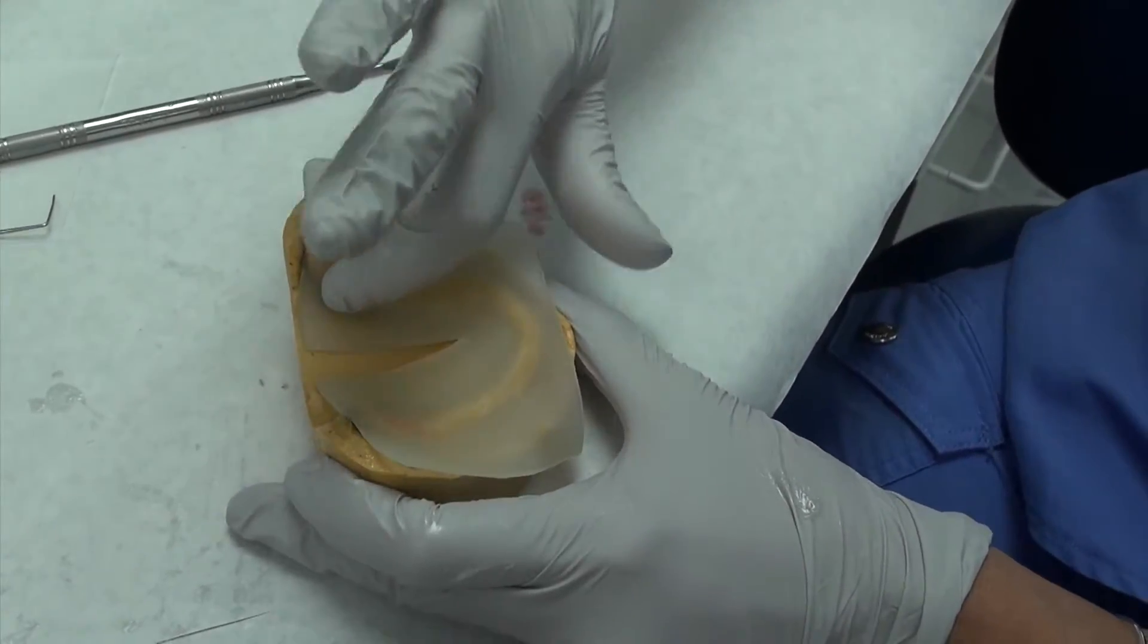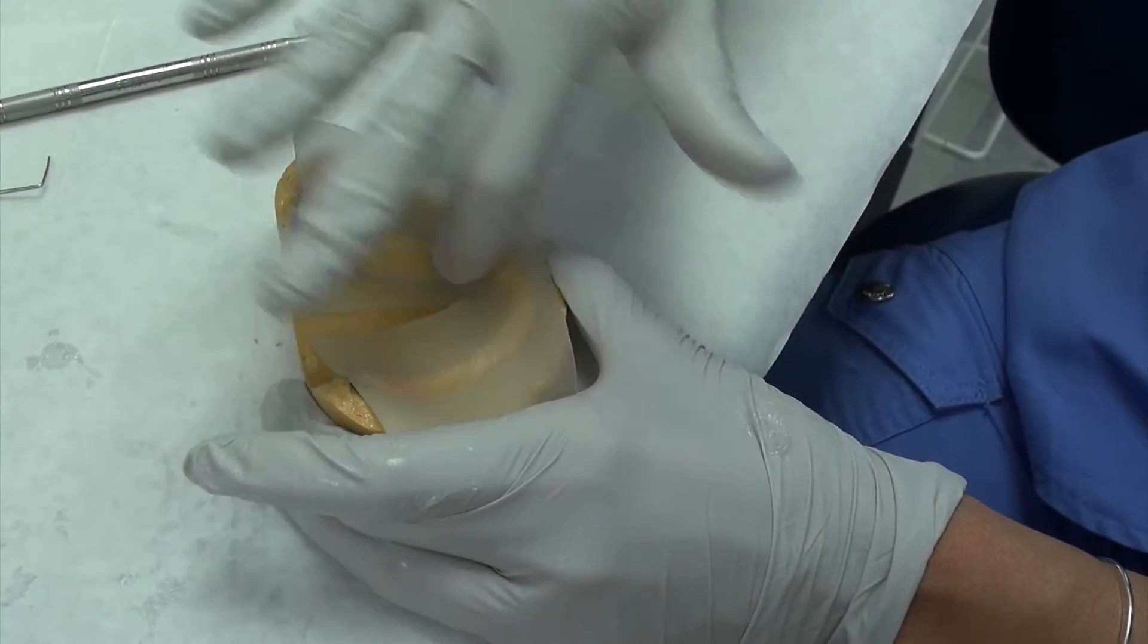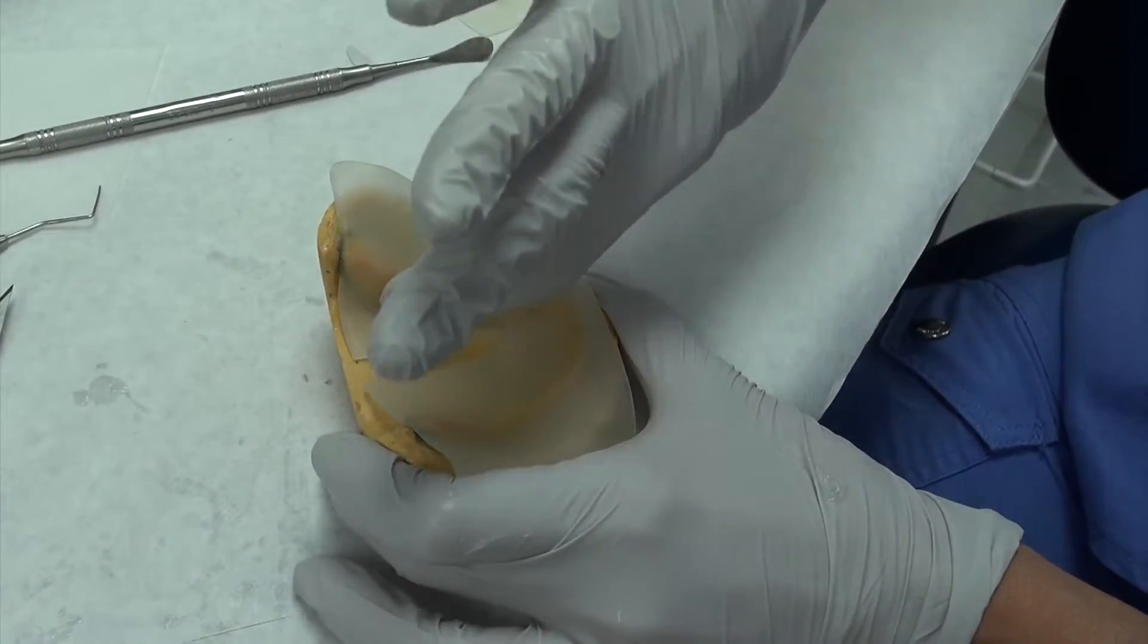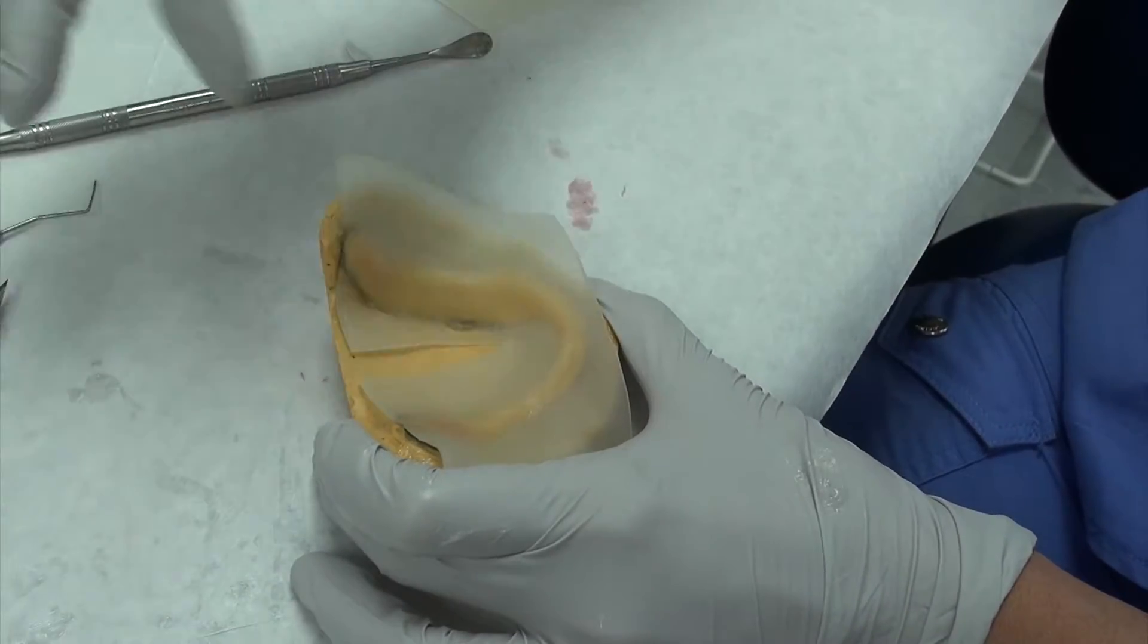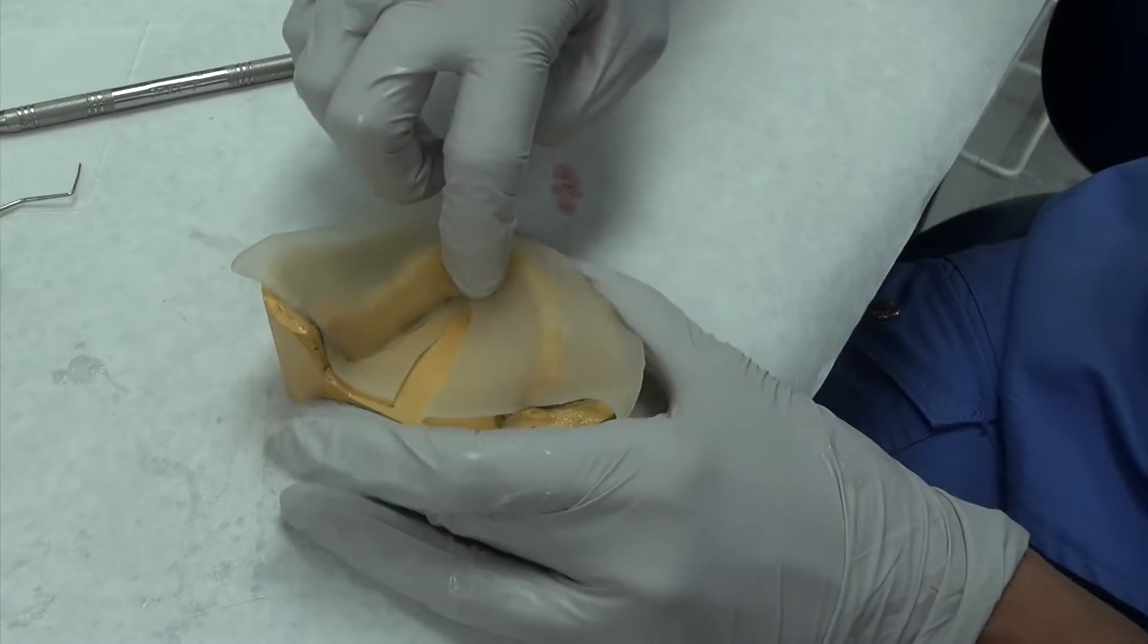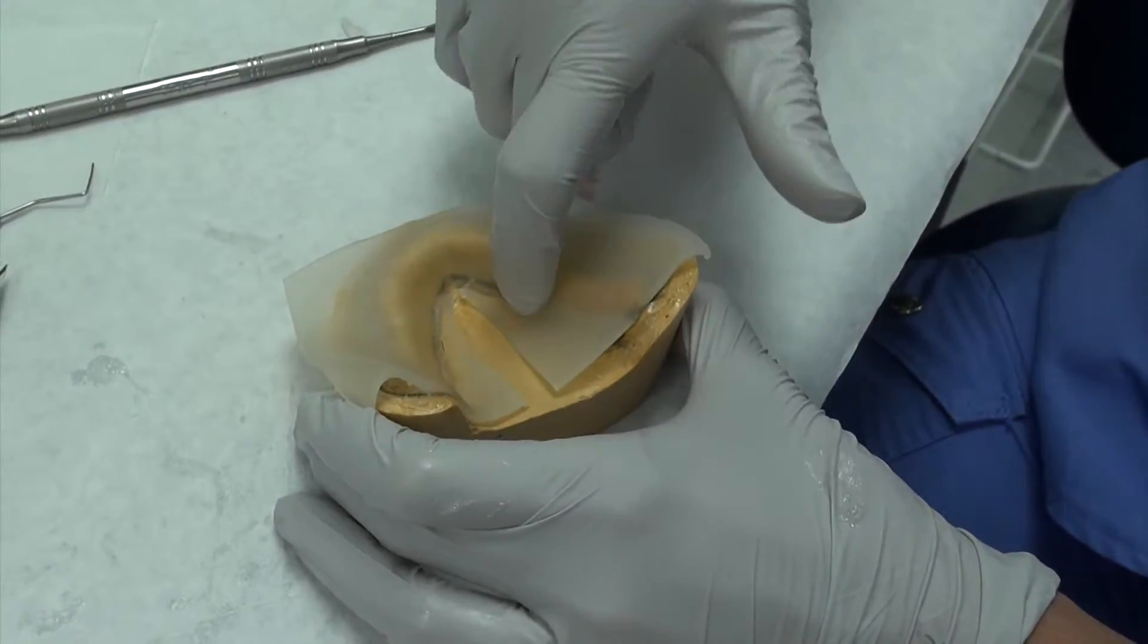All the way to the retromolar pad. Now once you do that, you can in either direction that you prefer, downward motion. And you see how I'm kind of pushing even in with my nail a little bit, because we want to get into that sulcus, your lingual sulcus.